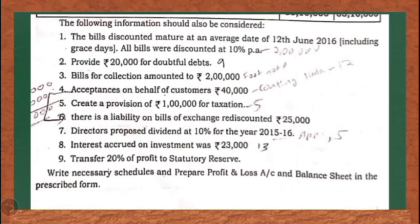The additional information given is: first, the bills discounted mature at an average date of 12th June 2016 including grace days, and all bills were discounted at 10% per annum. Second, provide Rs. 20,000 for doubtful debts. Third, bills for collection amounted to Rs. 2,00,000. Fourth, acceptances on behalf of customers amounted to Rs. 40,000. Create a provision of Rs. 1,00,000 for taxation. There is a liability on bills of exchange rediscounted amounting to Rs. 25,000. Directors proposed dividend at 10% for the year 2015-16. Interest accrued on investment was Rs. 23,000. Transfer 20% of profit to statutory reserve.